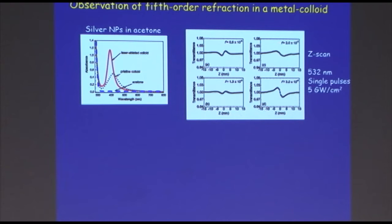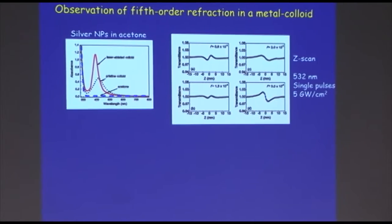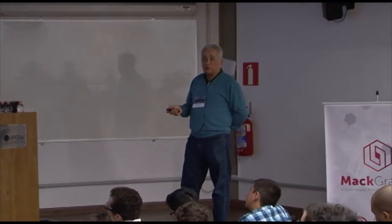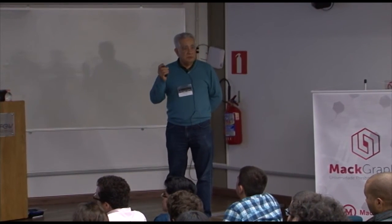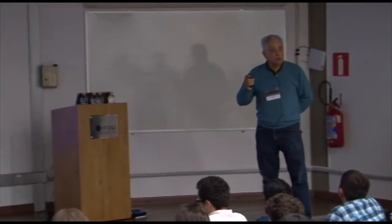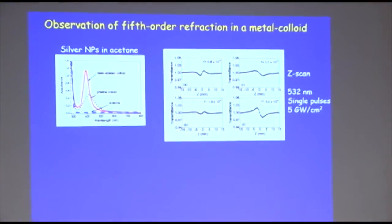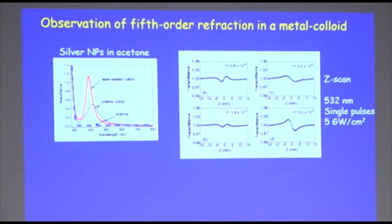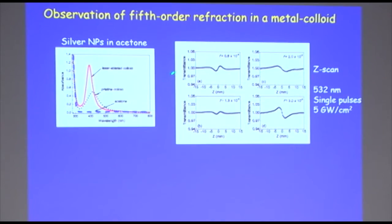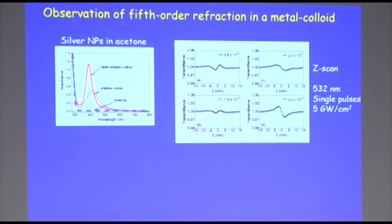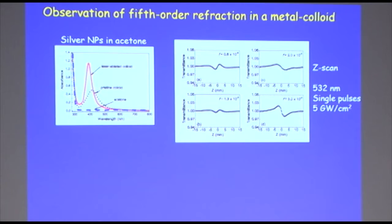Again I use silver nanoparticles, but in this case the host is acetone. Acetone has a very small value of Chi-3 compared with CS2, so the contribution of the nanoparticles is very relevant. What you see in the Z-scan profile is that by changing the filling fraction of nanoparticles — here going from 0.8×10⁻⁴ to 3.0×10⁻⁴ — the profile changes symmetry, going from positive to negative effective nonlinear refraction.